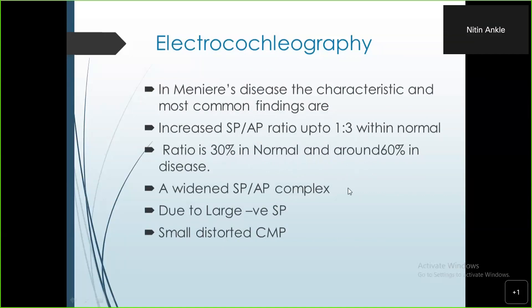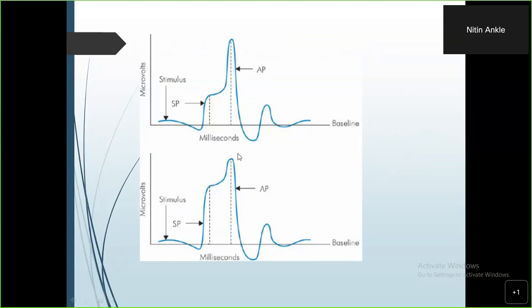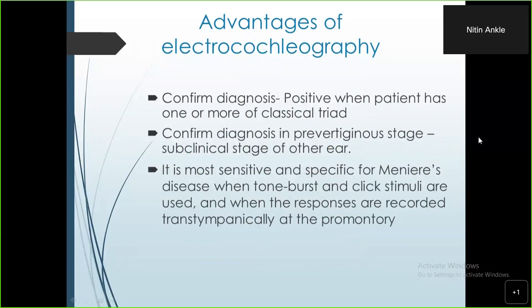On the SP/AP graph, there is widening of the SP-AP complex due to negative summating potentials, with small distorted cochlear microphonics. In this graph, the summating potential is measured after 10 milliseconds — you can see the graph rising. Comparing it to the action potential, if you take the ratio, the SP is more than double compared to normal. This is the characteristic finding in Meniere's disease.